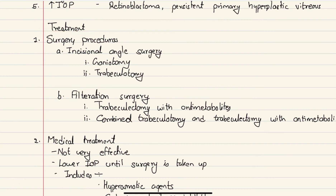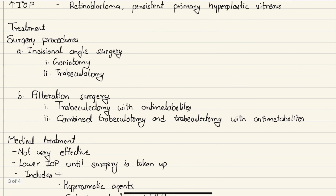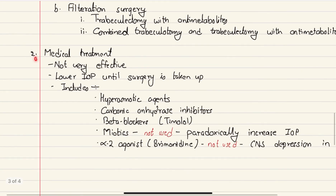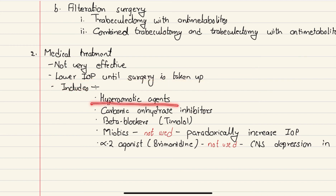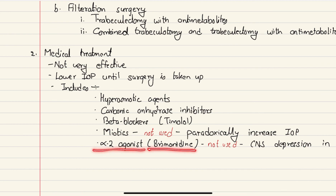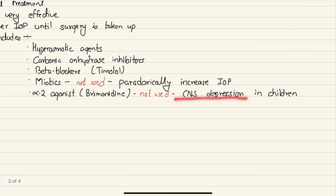The definitive treatment for congenital glaucoma is surgery. This includes incisional angle surgery performed through goniotomy and trabeculotomy, and filtration surgery which includes trabeculectomy with anti-metabolites or combined trabeculotomy and trabeculectomy. Medical treatments are not given often as they are not very effective, but can be given to lower intraocular pressure until surgery is arranged. These include hyperosmotic agents such as glycerol, carbonic anhydrase inhibitors such as acetazolamide, and beta blockers such as timolol. Miotics are not used as they can paradoxically increase intraocular pressure, and alpha-2 agonists such as brimonidine are not prescribed as they can cause CNS depression in children.